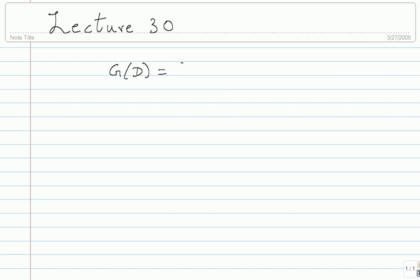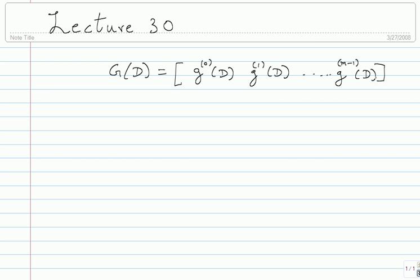In the D transform domain, in a typical situation it would have G0(D), G1(D), so on up to G(M-1)(D). So this would nicely describe an encoder for a rate 1 by M convolutional encoder.